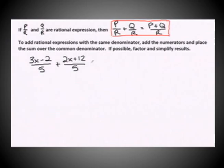So just stating that in words: to add rational expressions with the same denominator, add the numerators and place the sum over the common denominator. If possible, you always want to finish off by factoring and simplifying your results.